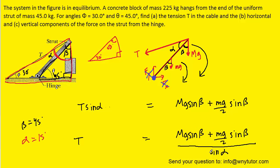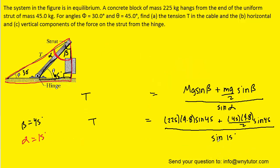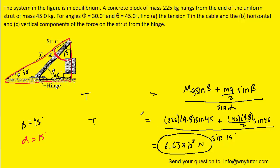With all known values plugged in, we compute the tension and get approximately 6.63 × 10³ newtons. This is the correct answer to part a — the tension in the cable.